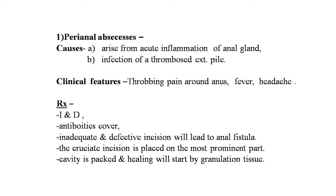The perianal abscess arises from acute inflammation of the anal gland or infection of thrombosed external piles. Clinical features include throbbing pain around the anus, fever, headaches, and chills. Treatment: incision and drainage (I&D) is the treatment of choice with antibiotic cover. Inadequate or defective incision will lead to anal fistula. A cruciate incision is placed on the most prominent part; the cavity is packed and healing starts by granulation tissue.